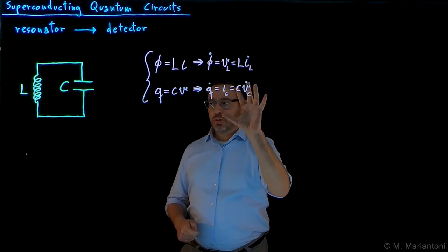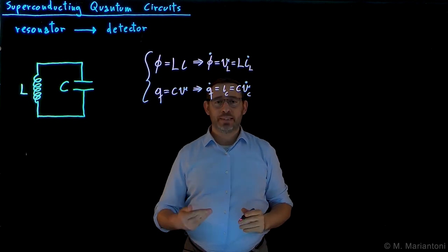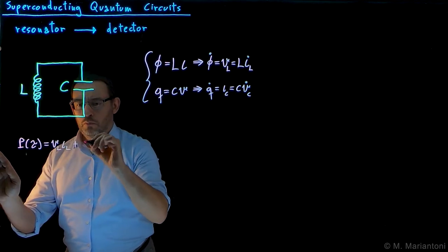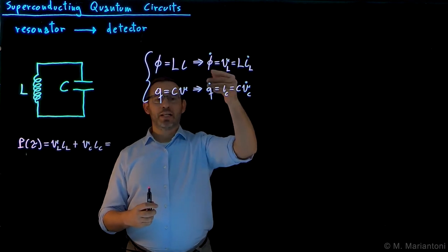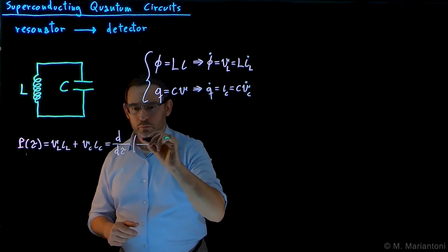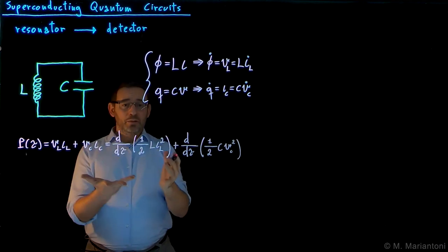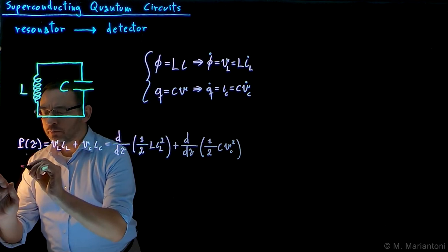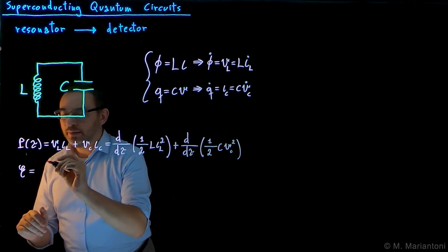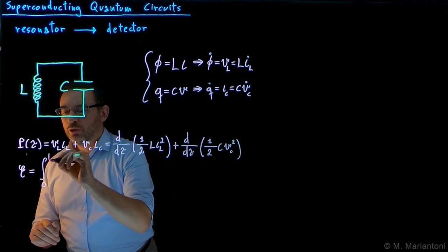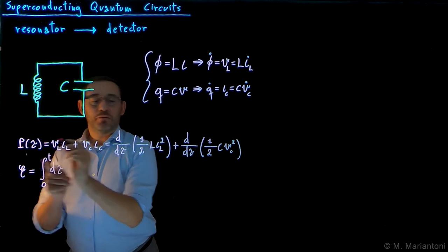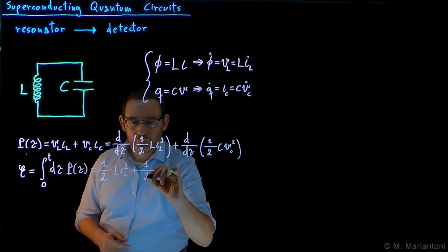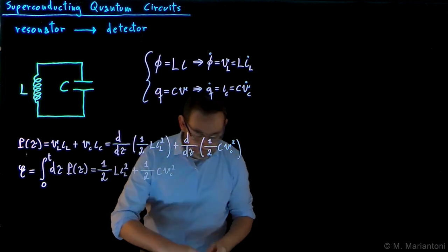We can now use these constitutive relations to write down the instantaneous power at the time tau, P at tau of this circuit. This power can be written by using the concept of total derivative. Now that we have the knowledge of the instantaneous power of this circuit, we can write the energy simply as the integral from a zero time to a generic time t of this power, which is d over d tau, therefore obtaining the energy of an LC resonator.